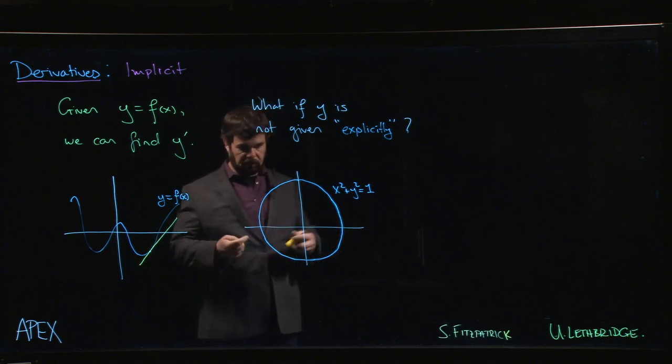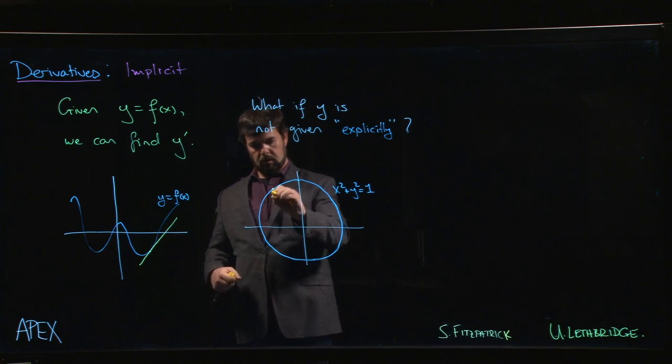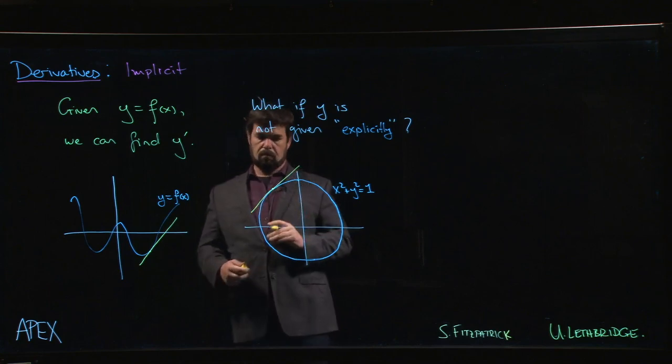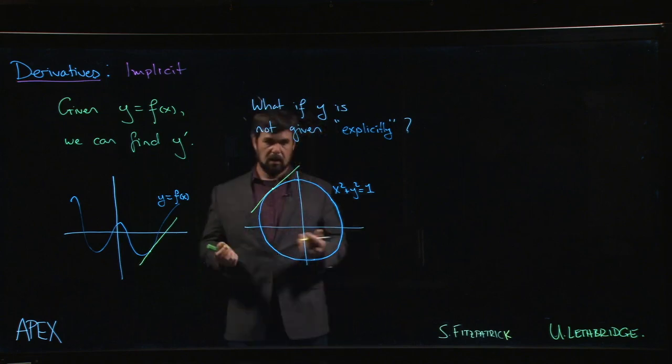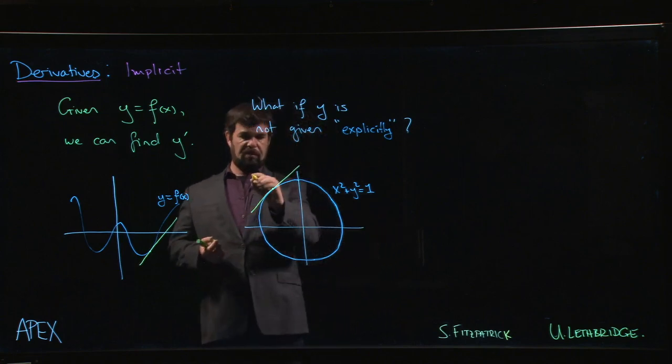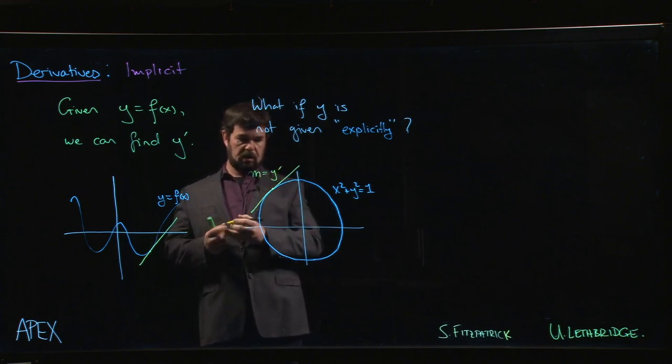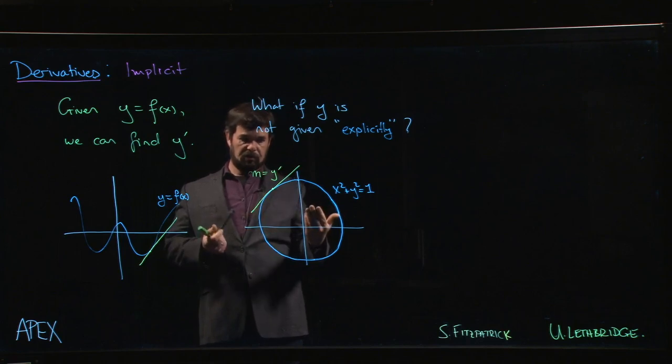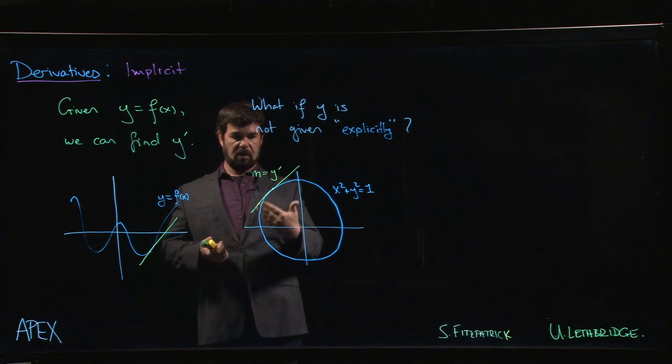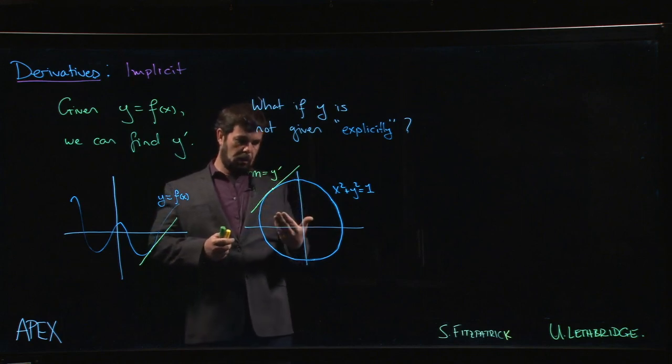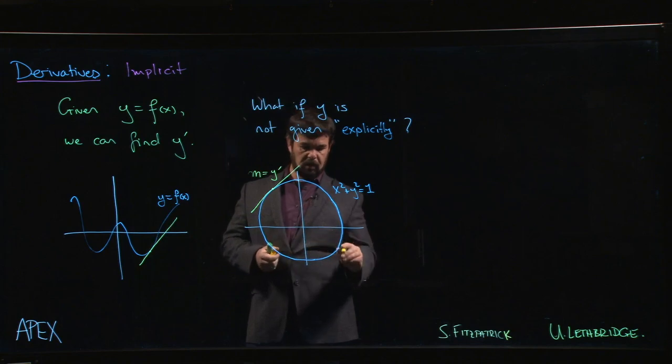But it's not the only type of curve that we might consider. It's perfectly valid to look at something like a circle, and a circle certainly has a well-defined tangent line at any point. It would be reasonable to say that the slope of that tangent line should still describe the rate at which y is changing with respect to x.